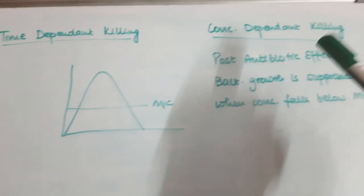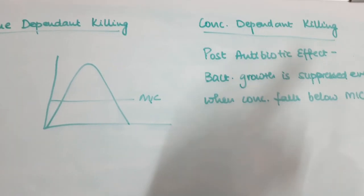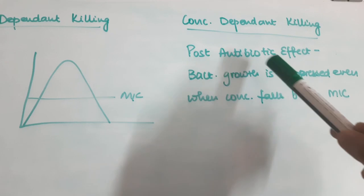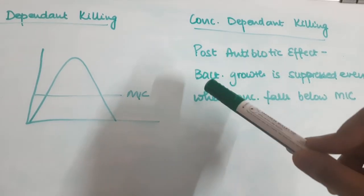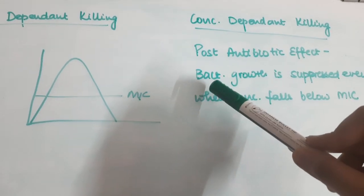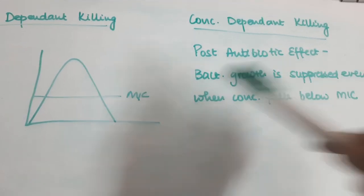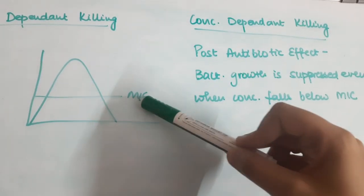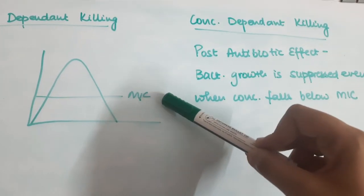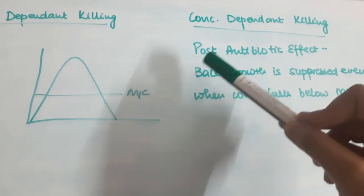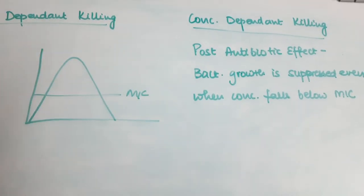Specifically in drugs that have concentration-dependent killing, we see something called a post-antibiotic effect. This is the phenomenon where bacterial growth is suppressed even when the concentration of the drug falls below the minimum inhibitory concentration. This is called the post-antibiotic effect.